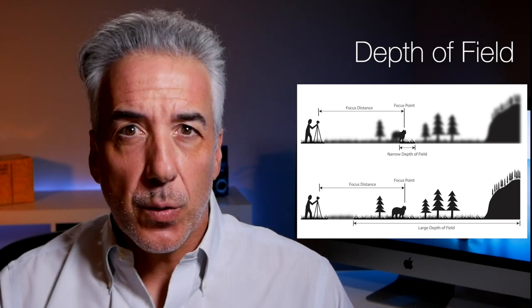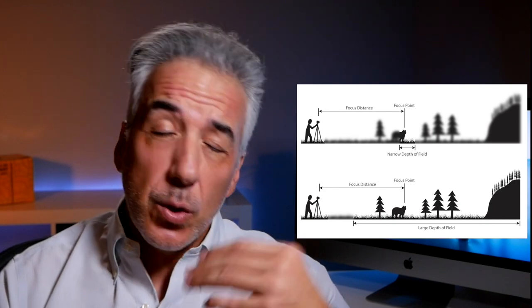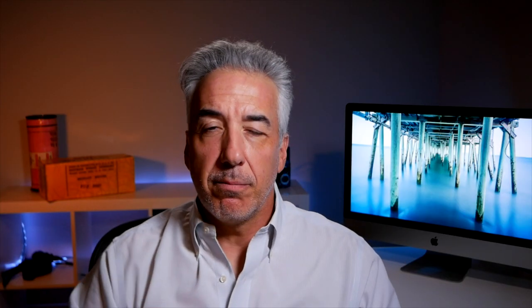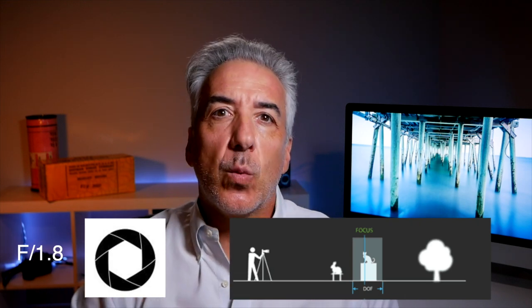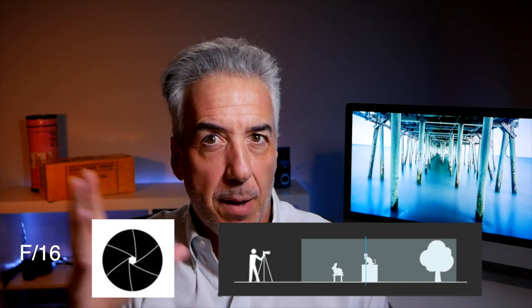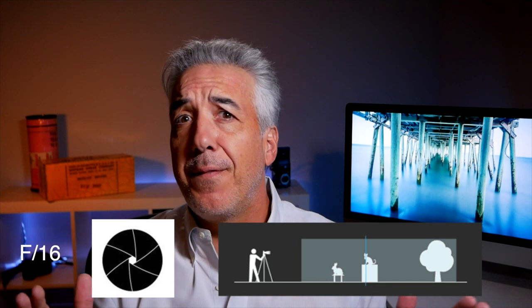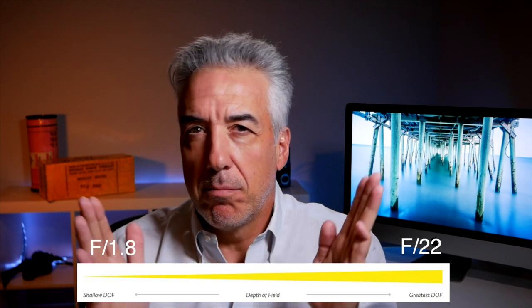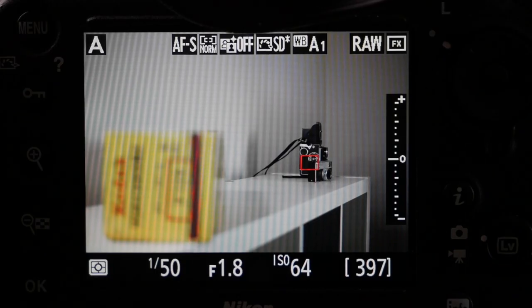Aperture also controls another very important element in photography: depth of field. Depth of field is the area which is in focus, measured from the closest object in focus to the furthest away. If we use a very open aperture — a small f-stop number like f1.8 — the depth of field will be very shallow, which is why this is called shallow depth of field. If we use a very closed aperture — a big f-stop number like f16 or f22 — the area in focus will be very deep. A quick way to remember: the bigger f-stop number gives you the larger depth of field. f22 = large, f1.8 = small.